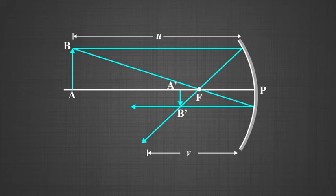This process gives us different values of u and corresponding values of v. Here, v is the distance from the mirror pole to the image, and u is the distance from the mirror to the object. Always remember the sign convention when recording u and v.